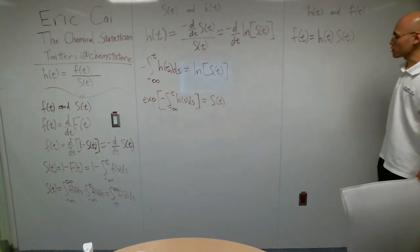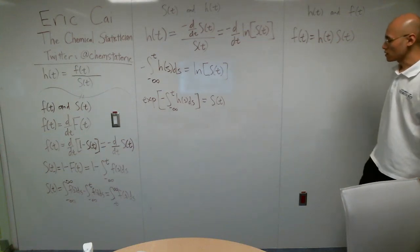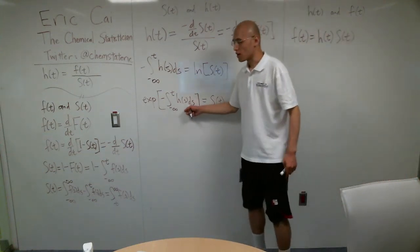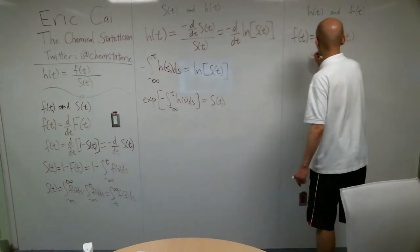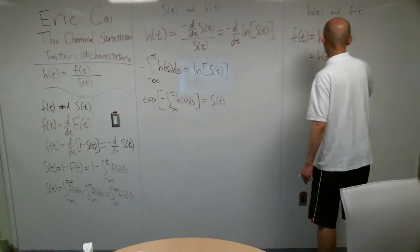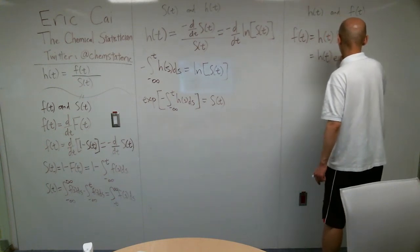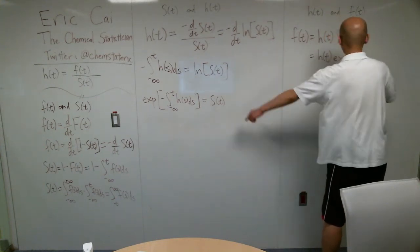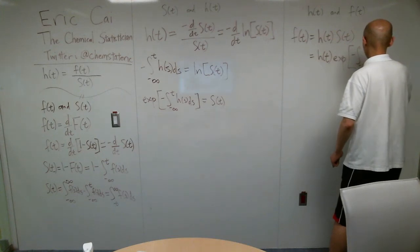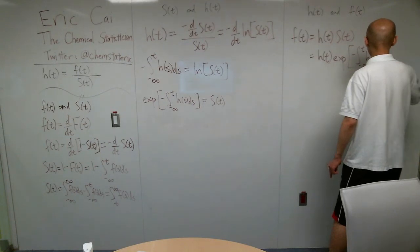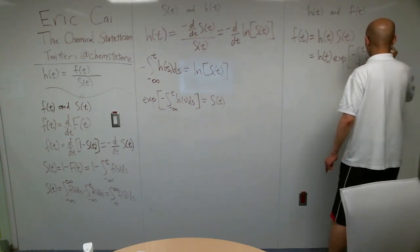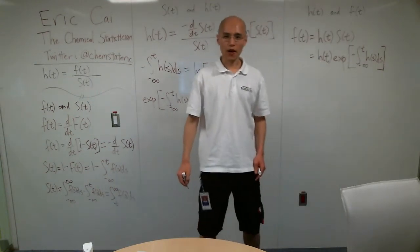Now, we just learned how to write S of t as a function of h of t. So this is just equal to h of t times e to that integral.